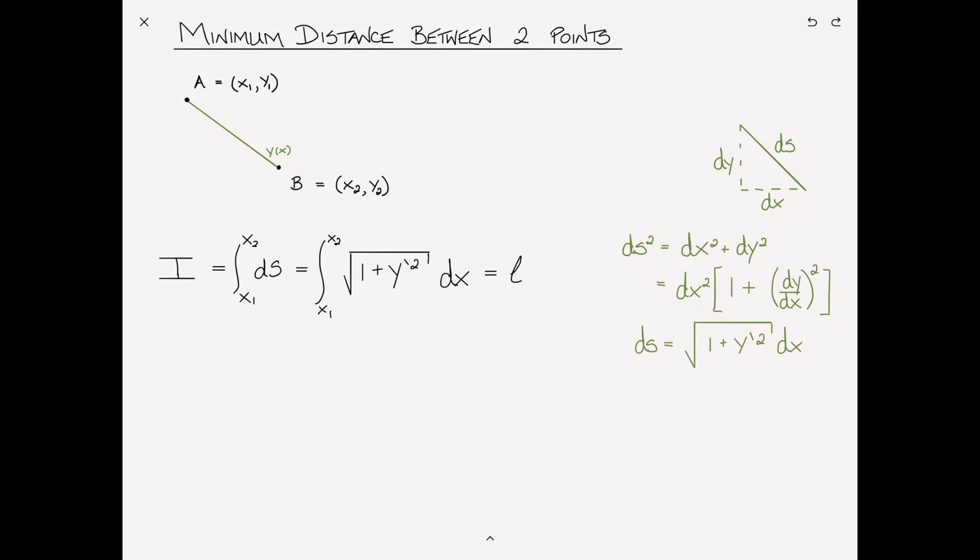And so this allows us to rewrite i as the integral from x1 to x2 of square root 1 plus y prime squared dx. And that we know is just the length of the path, which we'll call L. And I'll remind you in the context of the previous video where we derived the Euler-Lagrange equations, we call this the functional f.